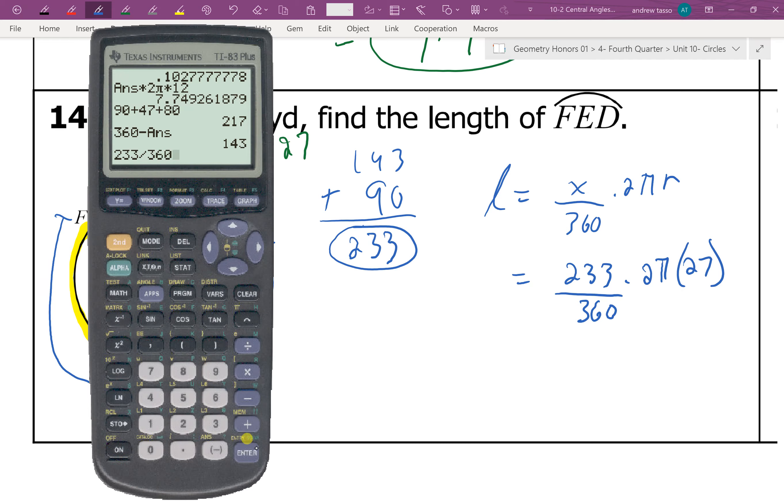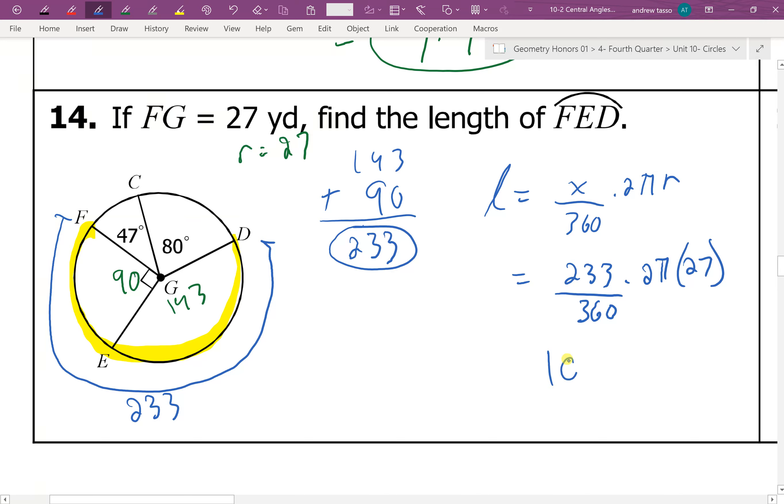So we have to enter all this into the calculator. 233 divided by 360, take your answer times that by 2 pi and times it by 27. And we get 109.7986. And if we round that off to the nearest hundredth, as the instructions say to do,